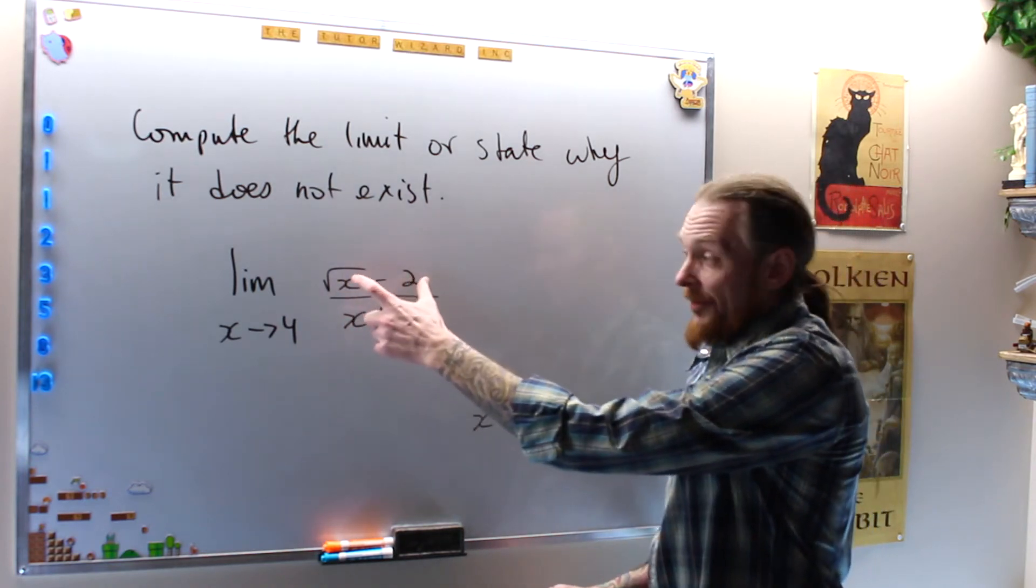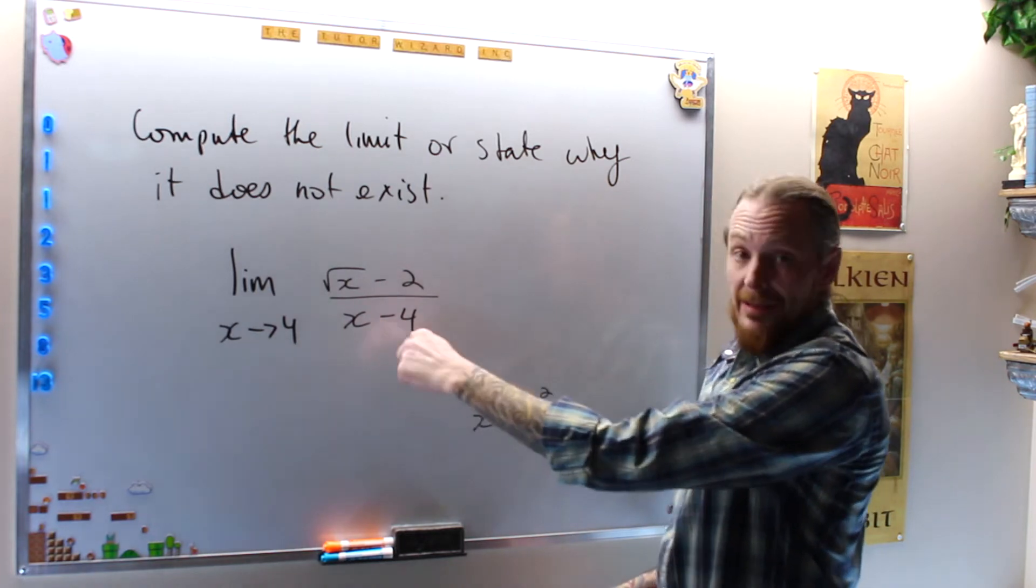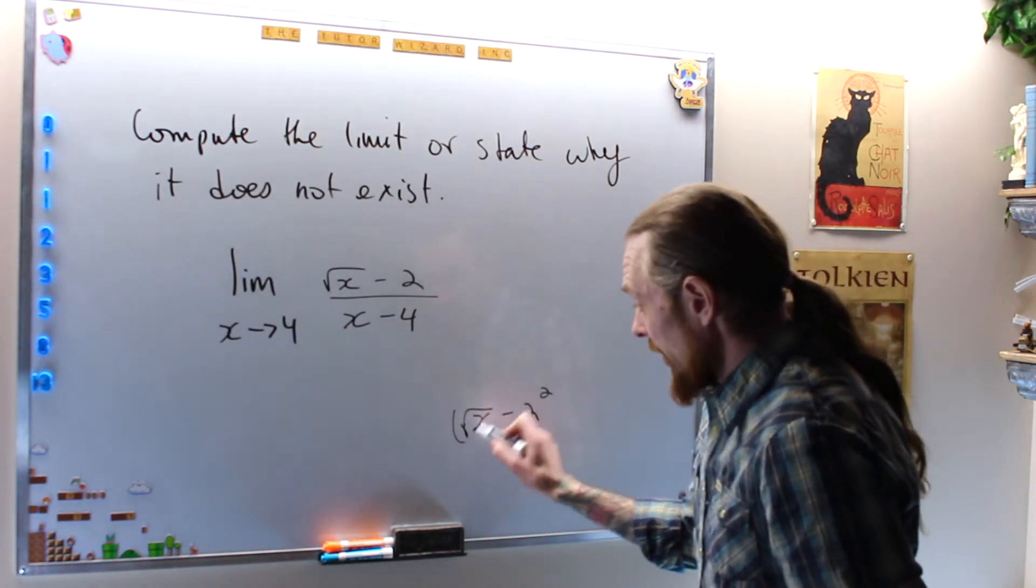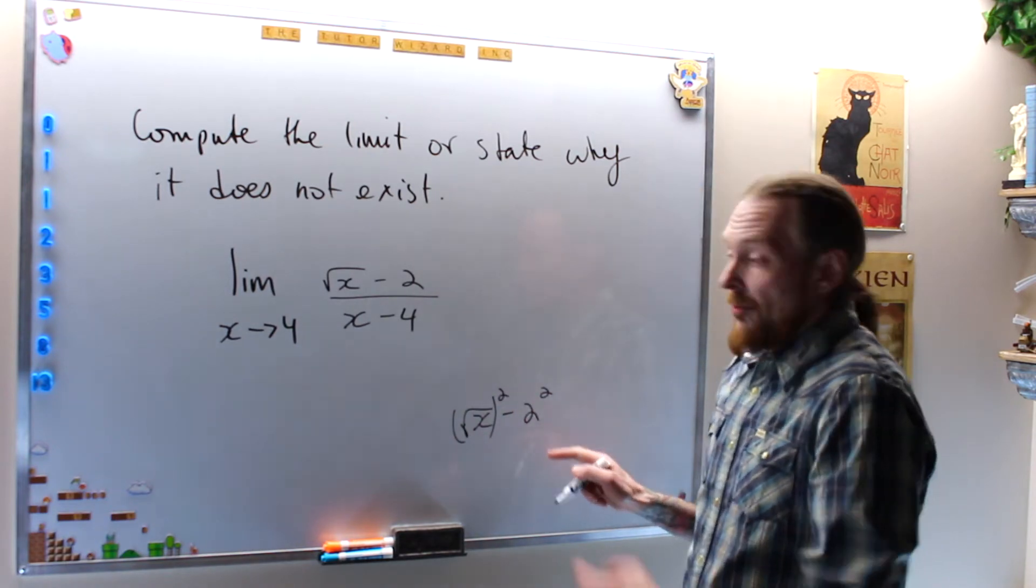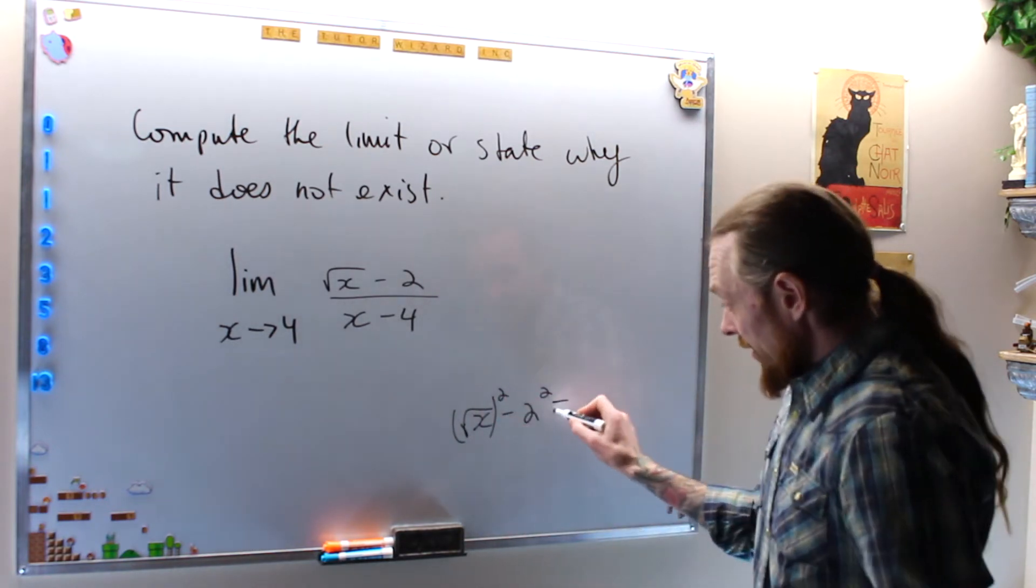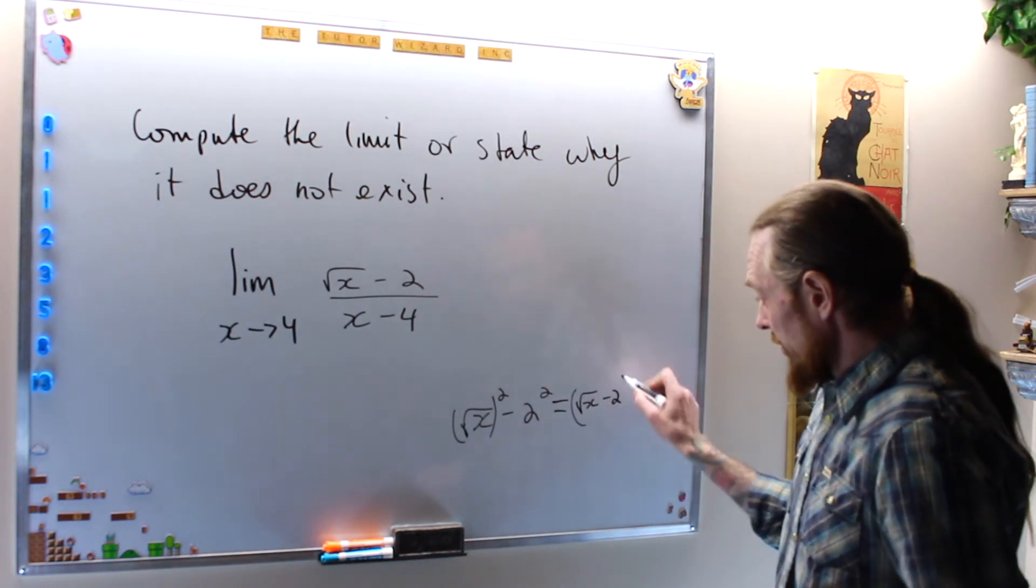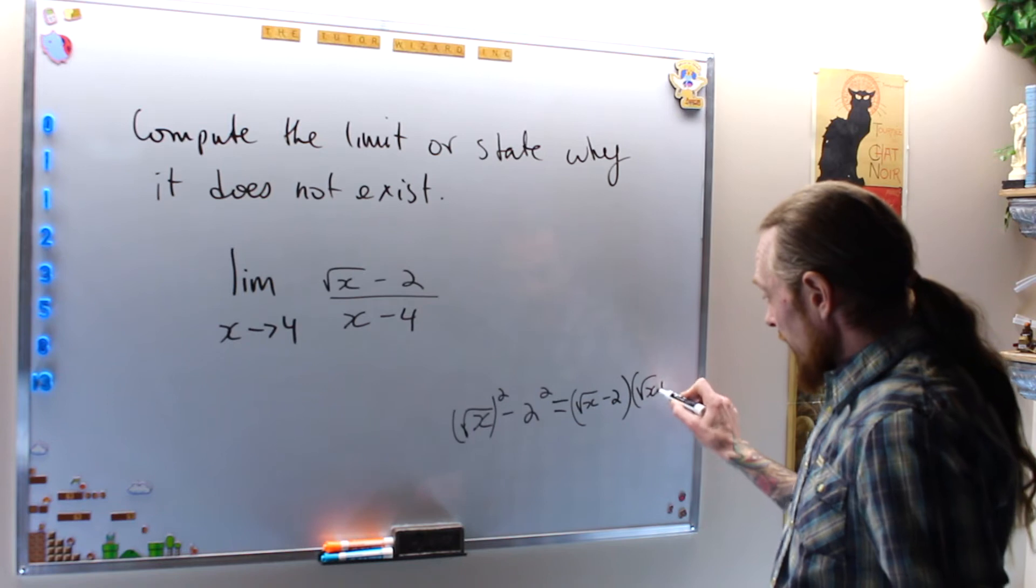If I want that to cancel and I can get rid of this, I'm going to write this as the square root of x squared minus 2 squared, and that is a difference of squares, so that is the square root of x minus 2 times the square root of x plus 2.